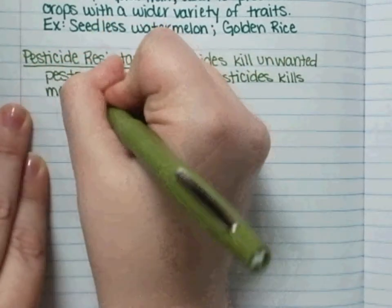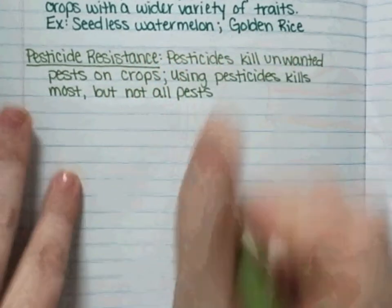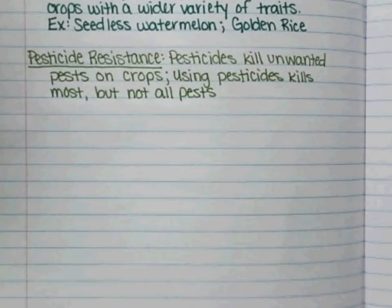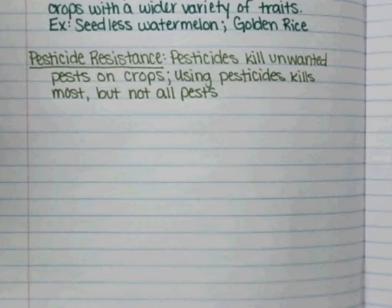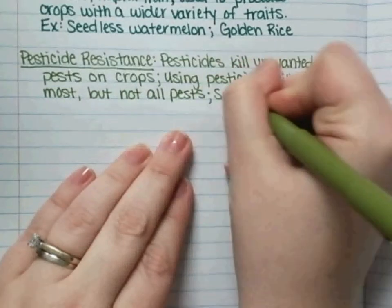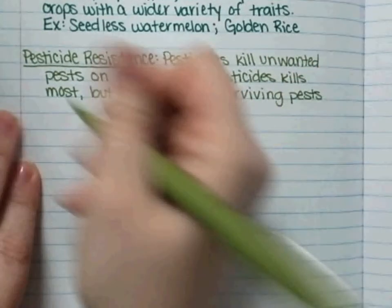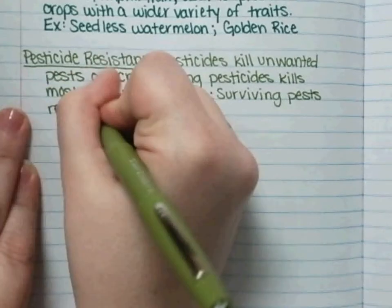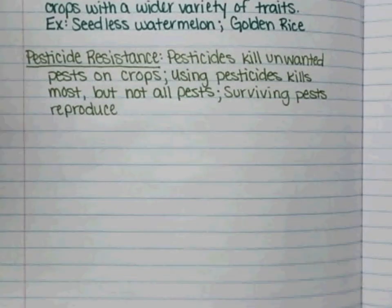So when a farmer sprays a field of crops with pesticides, using those pesticides kills most, but not all pests. It's kind of like if you look at an antibacterial cleaner — it never says it kills 100% of germs. It always says kills 99.9% of germs. It's that same sort of idea. It kills most of the pests, but some are still going to survive.